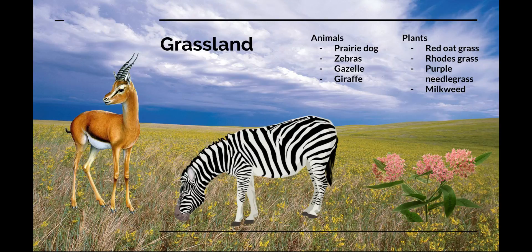Finally, we will conclude by talking about grasslands. Grasslands are places that receive more rain than deserts but less rain than forests. Most of the plants here are grasses, which don't need much water. Every continent except Antarctica has grasslands, but they all have different names in different places.